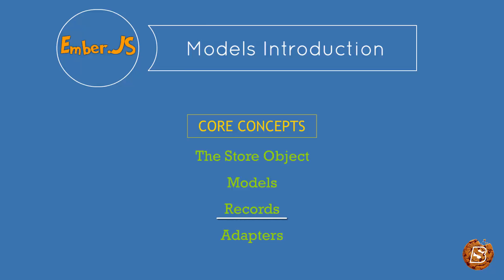The next concept is record. A record is an instance of a model that contains data loaded from a server or local repository. Our application can also create new records and save them back to the server, or if you are making use of the fixture adapter, it will be saved in cache. A record is uniquely identified by its model type and ID — so if I have to find a course, the model will be course and the unique identifier will be an attribute called ID. An adapter is an object that knows about your particular server backend and is responsible for translating requests for and changes to records into the appropriate calls to your server. The store will automatically cache records for you; if a record has already been loaded, asking for it a second time will always return the same object instance.